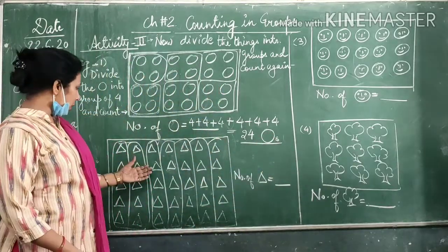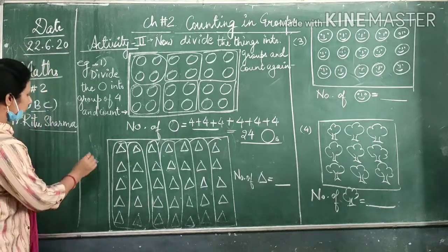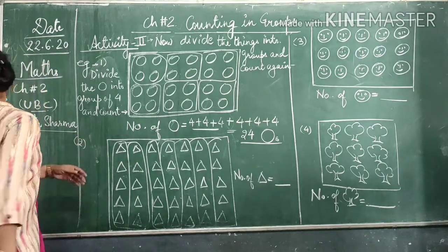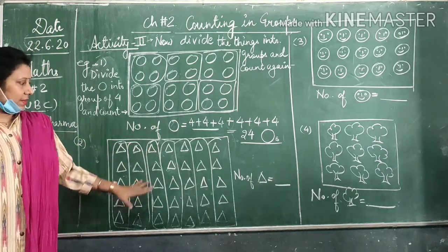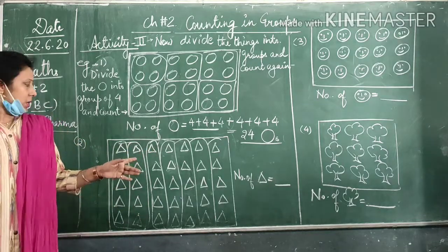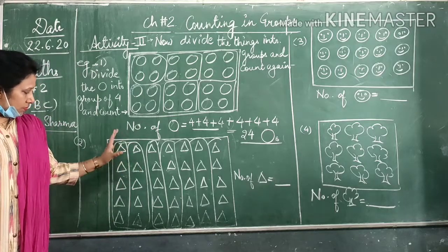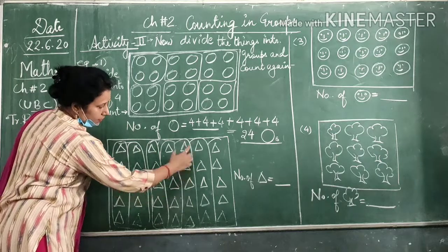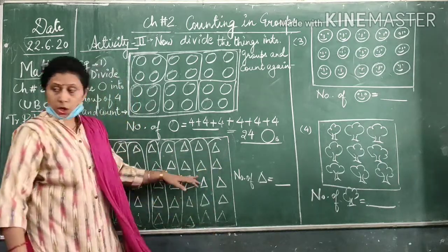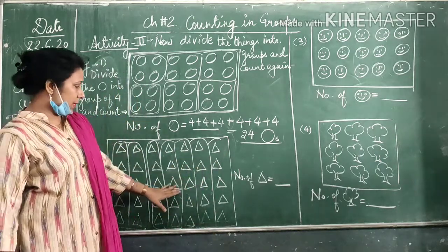Likewise you have to do here also. In here you have to divide these into group of 5. So we will just start with 5, then in it 5, 5, 5, 5, 5. So now how do you count?